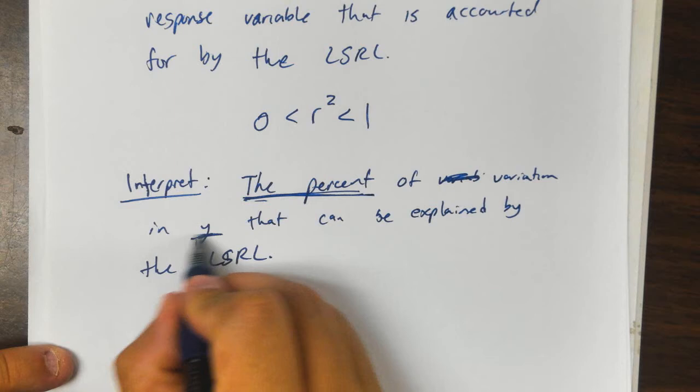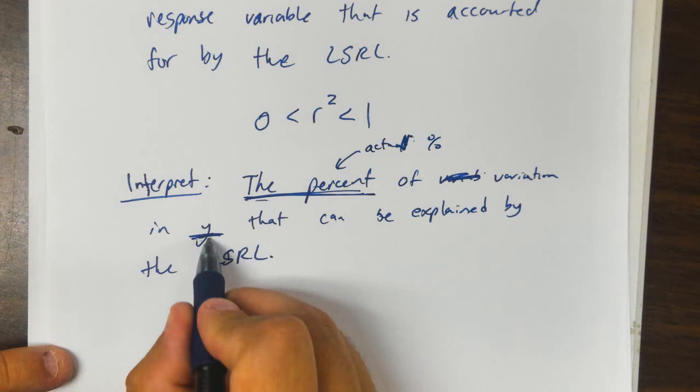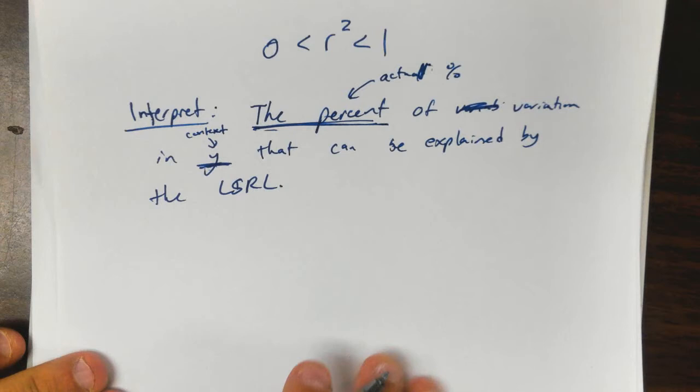The parts that I underline, you're going to change. This will be the actual percent that you put in, and this will be the context of what Y really is.